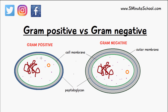In gram positive bacteria this peptidoglycan layer is very very thick. In gram negative we have the cell membrane and the cell wall made from peptidoglycan, but it's much thinner in comparison. We have two periplasmic spaces and then we have an outer membrane which is made from liposaccharide. Gram positive doesn't have this additional layer — the outer layer is just the cell wall — however gram negative has an outer membrane made from liposaccharide.